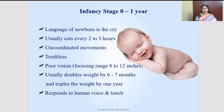At the time of birth, they have poor vision, and slowly it keeps developing to focus at a range of 8 to 12 inches. Usually the ideal weight of a newborn baby is 3 kg. They double their weight by 6 to 7 months and triple the weight by 1 year. The infant responds to the human voice as well as to the human touch.